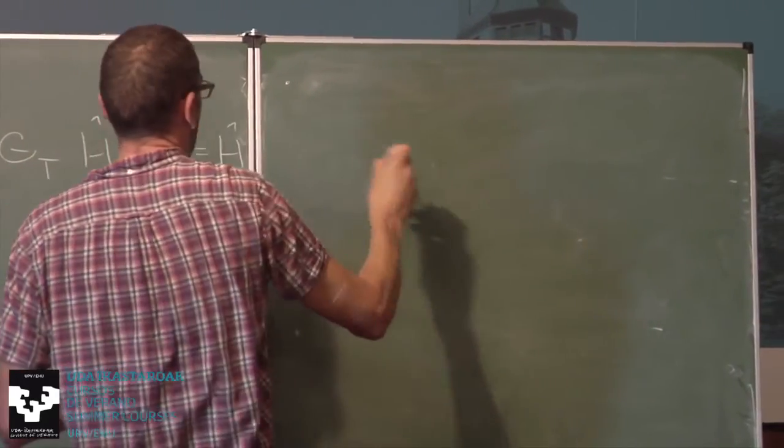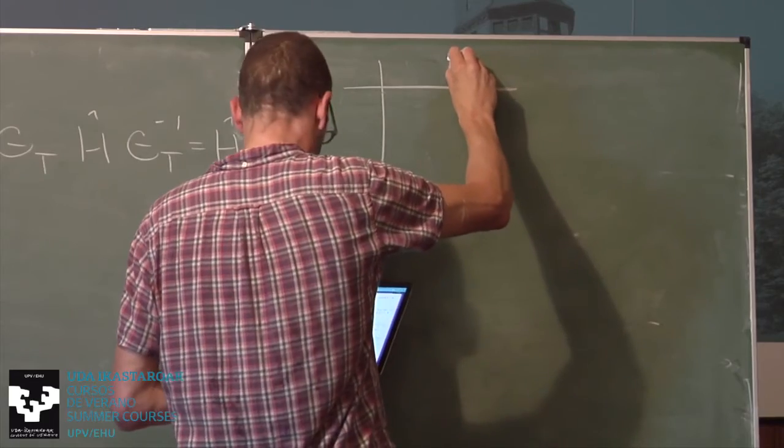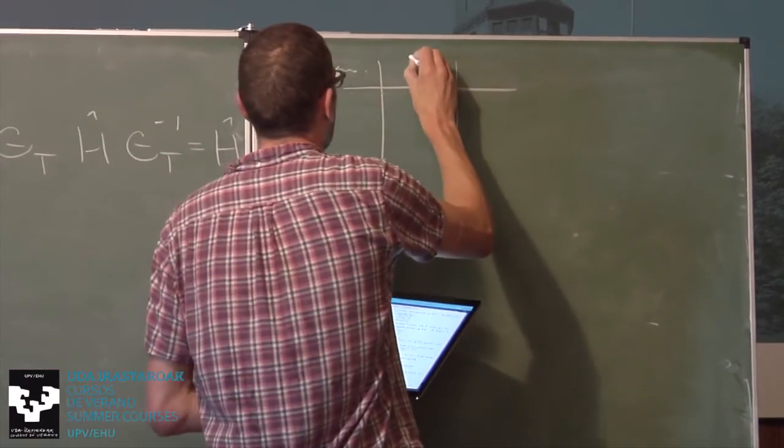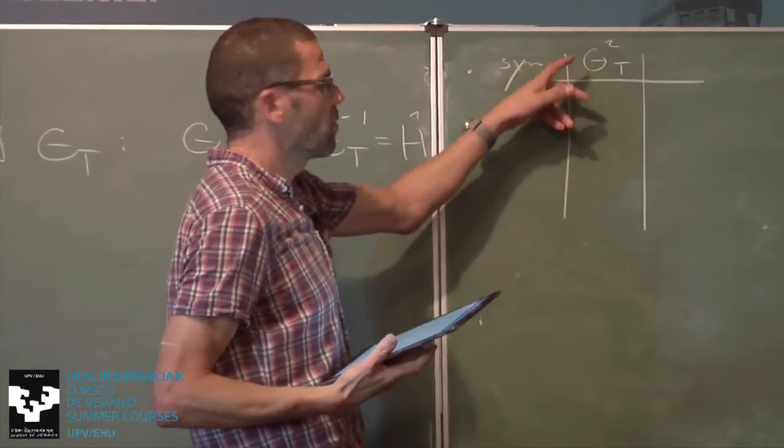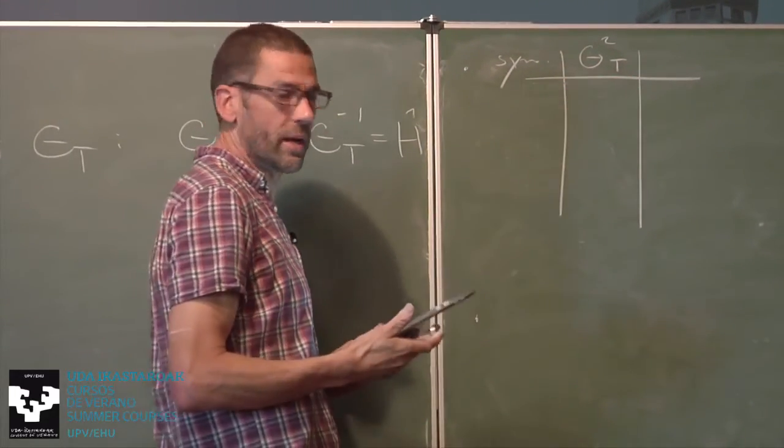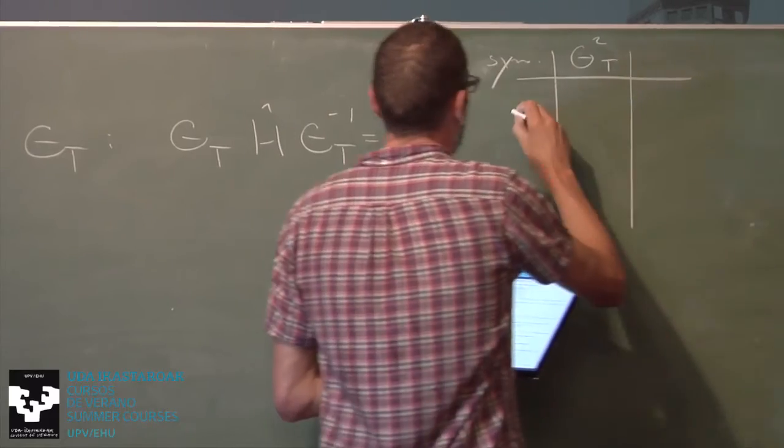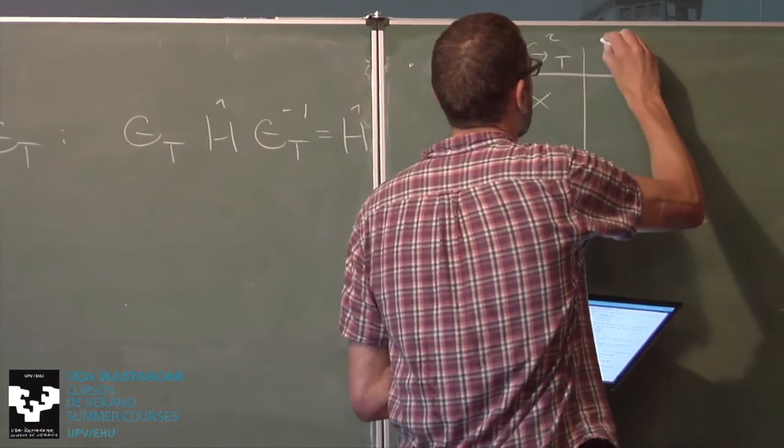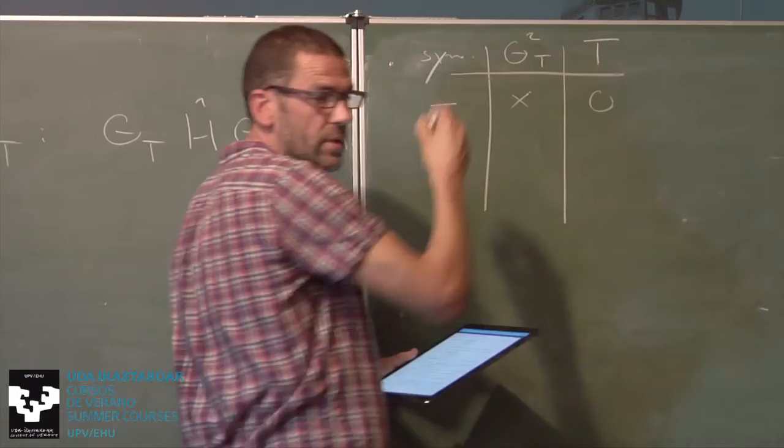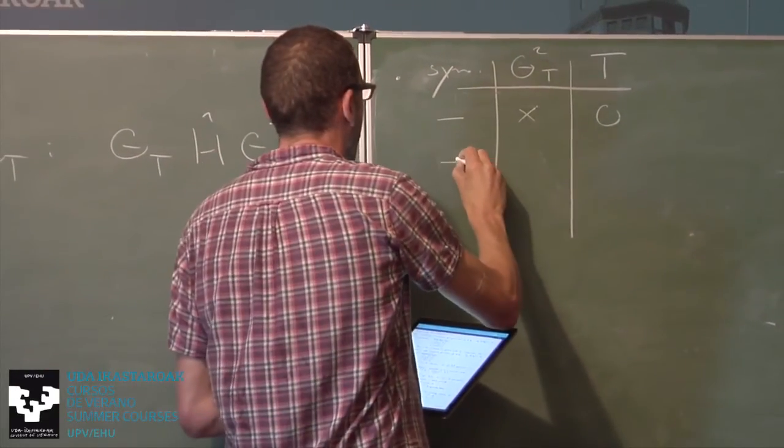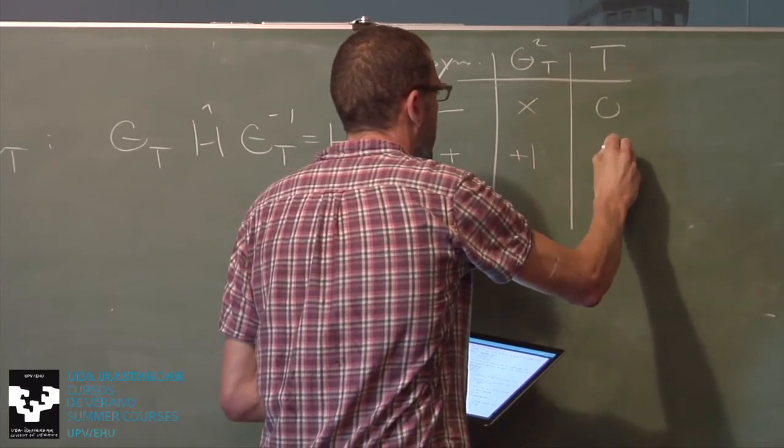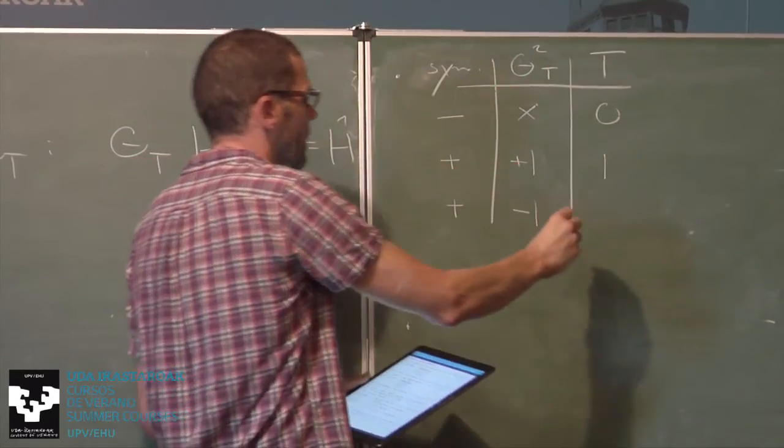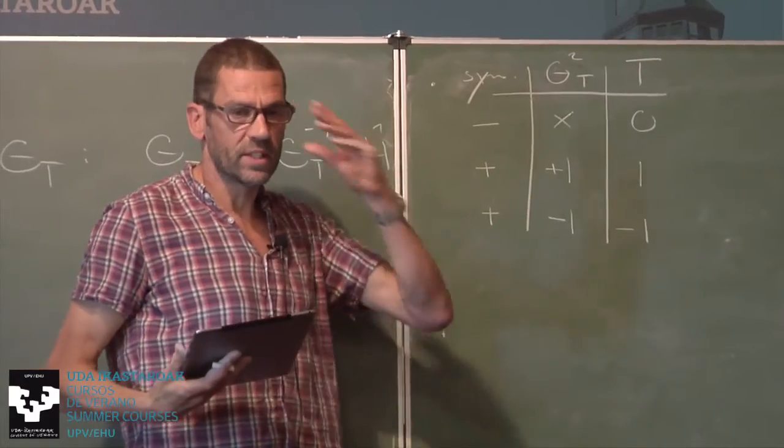A system is time reversal invariant if there exists an anti-unitary, therefore theta, some anti-unitary symmetry, let's call it theta t, such that theta t stabilizes the Hamiltonian, in this sense. And if we find an anti-unitary symmetry, no matter what, and it does this with the Hamiltonian, we call the system time reversal invariant. We now have three possibilities. We can write down a little table listing the different options we have.